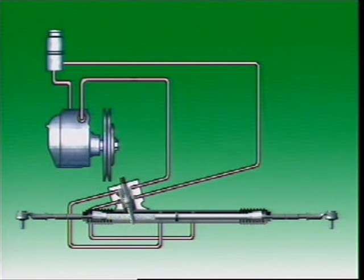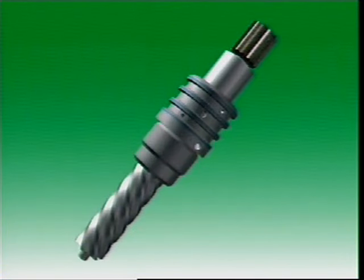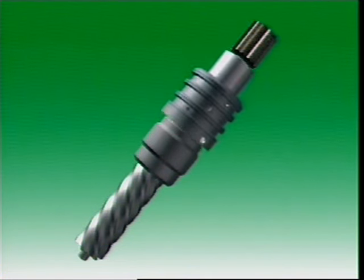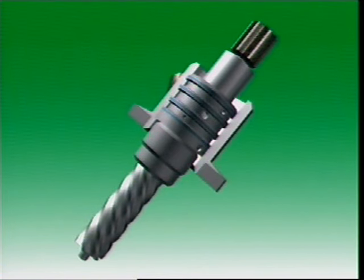The rotary valve is located between the steering gear input shaft and the pinion gear. It consists of an inner member which forms part of the input shaft and a surrounding sleeve member fixed to the pinion gear.